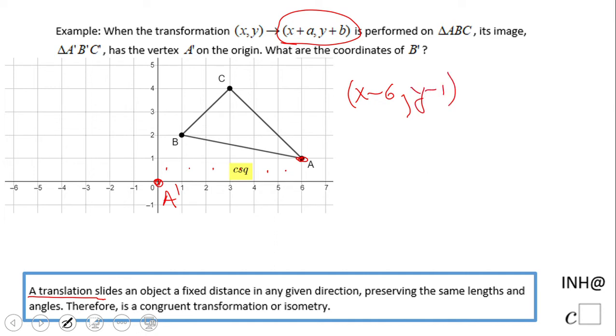Let's double-check that point A, which is (6,1), follows that rule. We get A prime which is (0,0). So the question is, what are the coordinates of B prime?